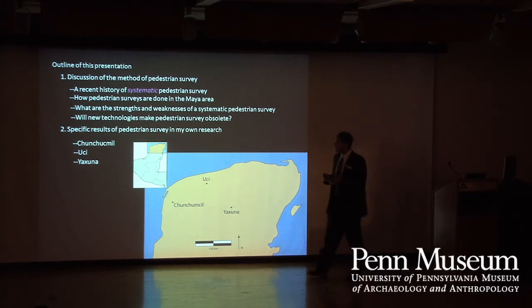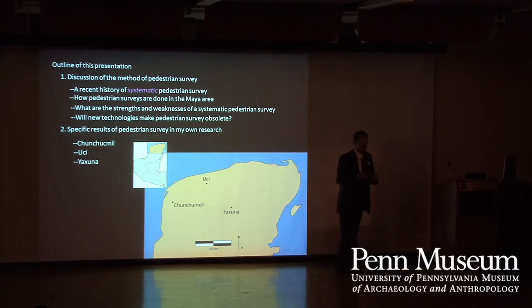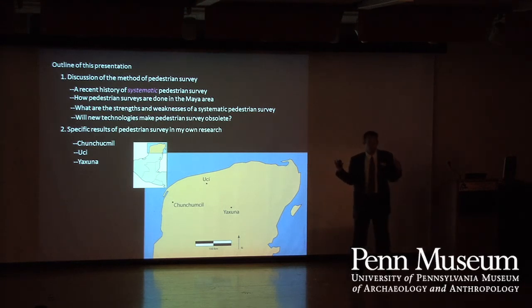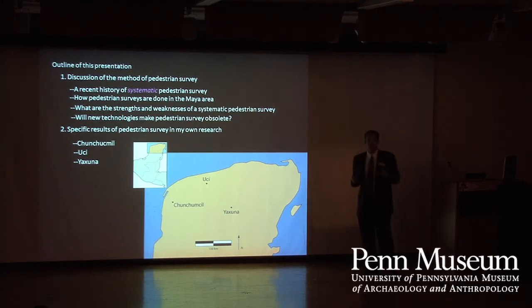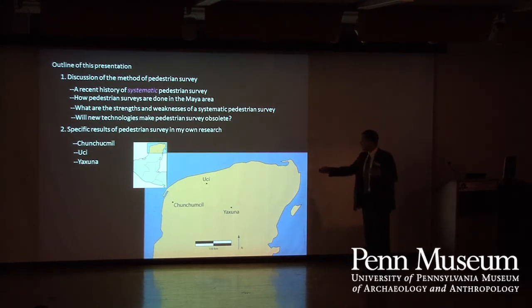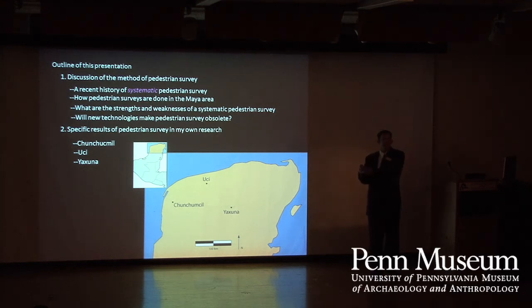Chuchuchmiel is an interesting site for pedestrian survey because we found it was so much bigger than we thought, and it has really intricate settlement details. We've got a nice idea of movement through the site looking at the survey data. At Uqui, we're going to be talking about how the rise and fall of the local center Uqui impacted settlement dynamics nearby.